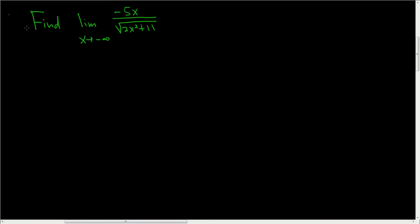I'm being asked to find the limit of this function right here as x approaches negative infinity. So the trick is to divide the numerator and denominator by this, the square root of x squared.